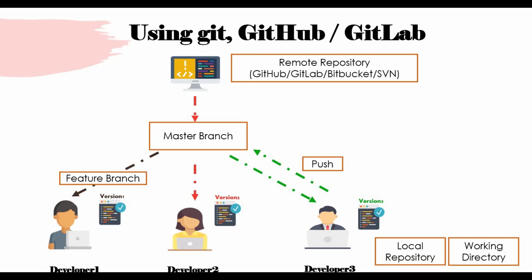The overall benefit is that you have a complete picture of what changes have been made in each version. You can merge versions together to get the overall product, fix conflicts, and if needed, roll back to a previous version — all achievable using Git, GitHub, and GitLab. Git is primarily a local machine software, and you run commands locally to push to GitHub, GitLab, Subversion, Bitbucket, or any preferred tool.